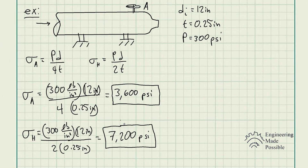This is where you see the worst case scenario — the highest stress developed for this pressure vessel would in fact be the hoop stress. This is what you should use when designing the pressure vessel so that it won't fail. If you use the longitudinal stress, you'd design it to only handle 3,600 pounds per square inch, but for the same pressure you'll develop twice that stress when looking at the hoop stress specifically. So we're always looking at the worst case scenario, and in this case we would utilize the hoop stress.